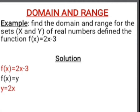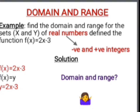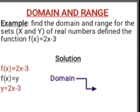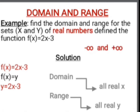Hence the function f(x) = 2x - 3 can be written as y = 2x - 3. Recall from the question that set x and y are sets of real numbers. Real numbers refer to both negative and positive integers. The domain of this function is the set of real x, and the range is the set of real y — that is, both are sets of real numbers between negative infinity and positive infinity.